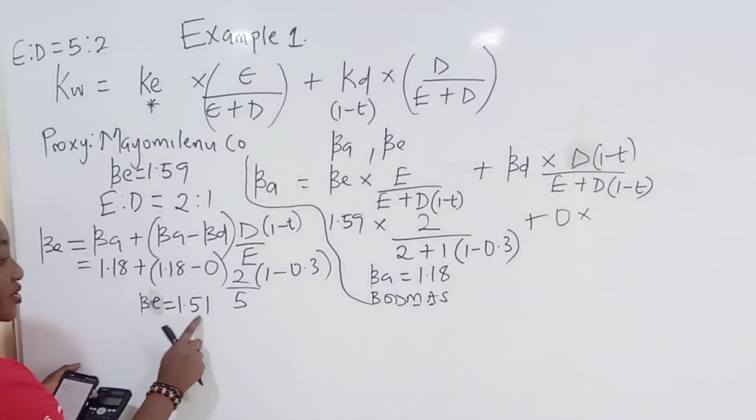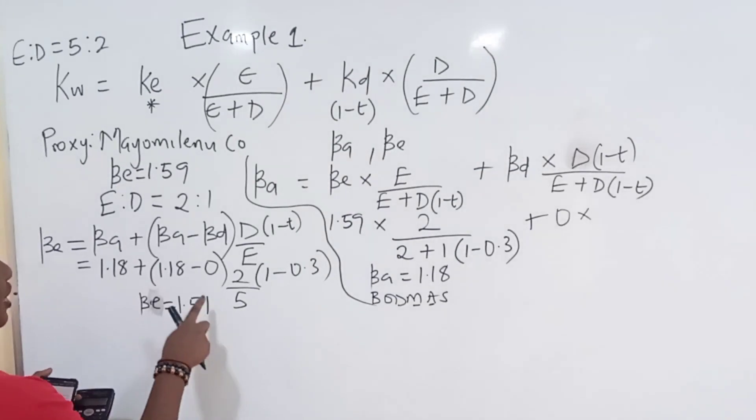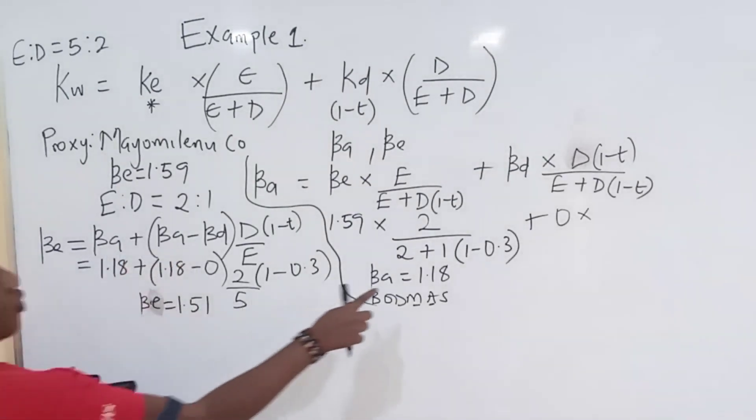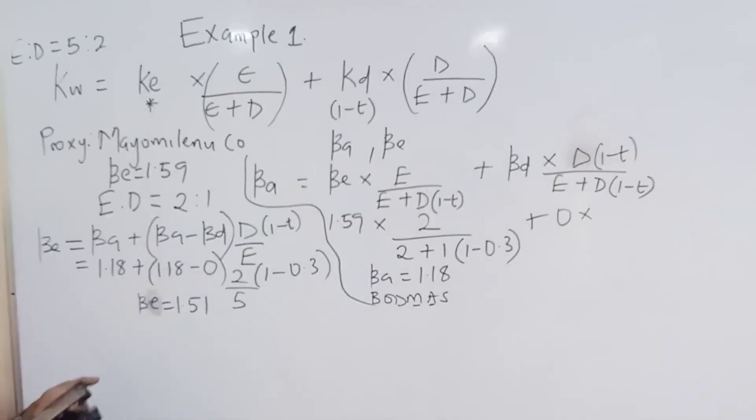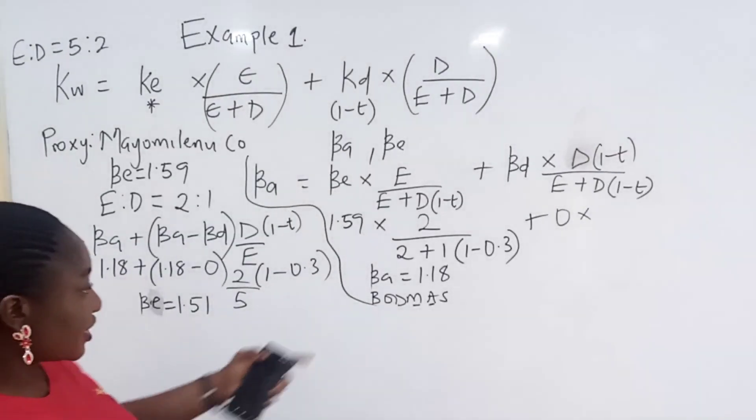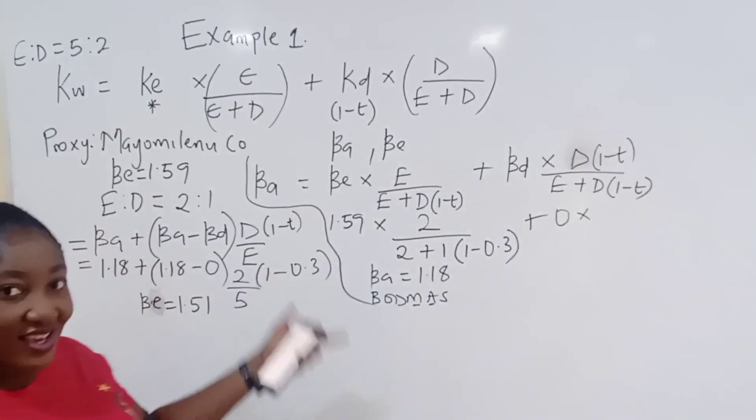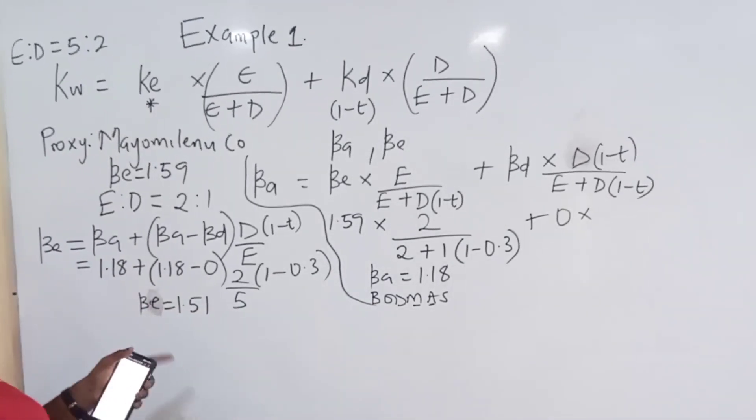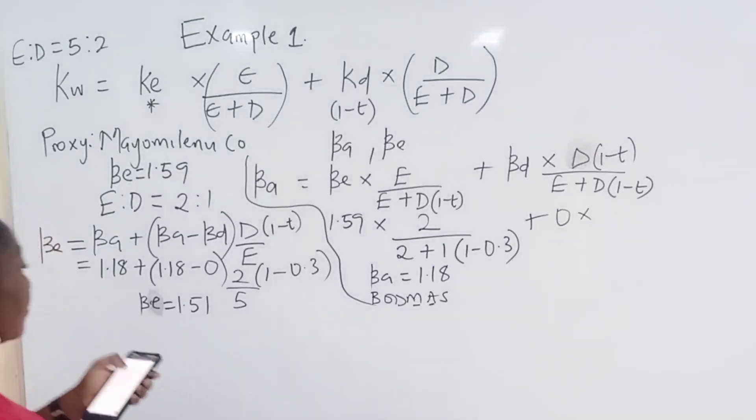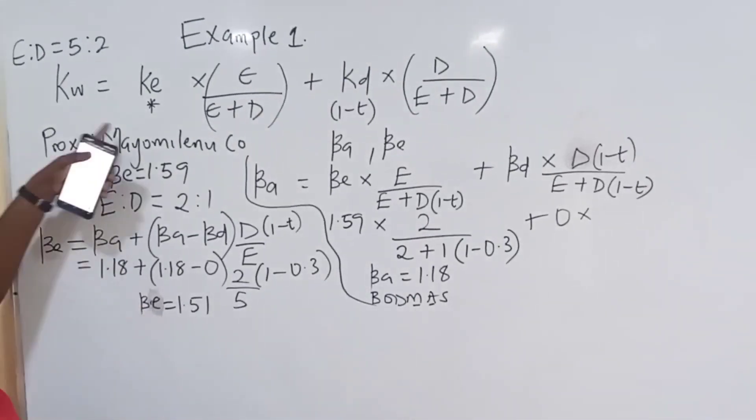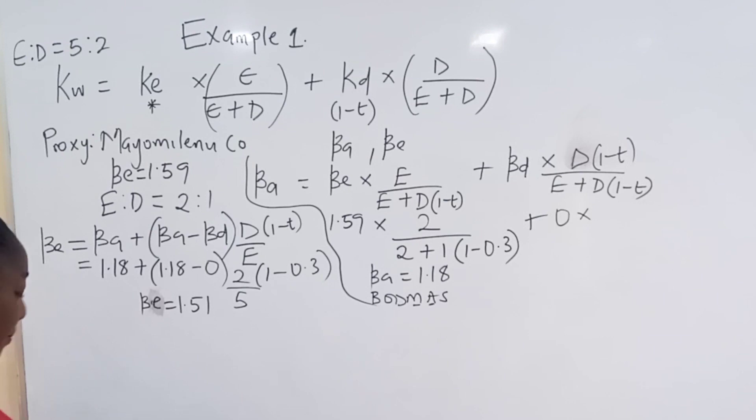That's the regeared company. That gives you BE is equal to 1.51. You can see that your BE is equal to 1.51 and that will be greater than BA of 1.18. Because you are putting debt. You are putting debt. Don't forget that BA is the risk that you spend with that ungeared company. No debt element. But once it has BE, it has put in the finance risk.